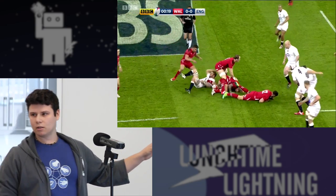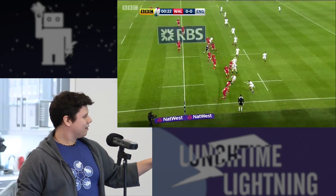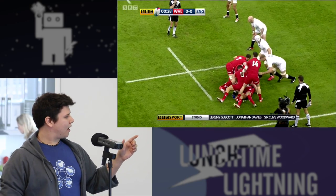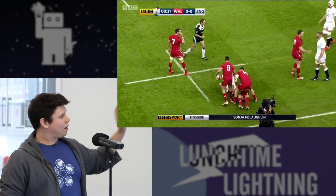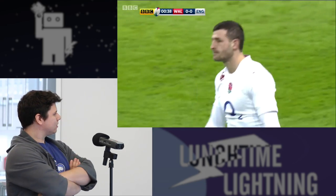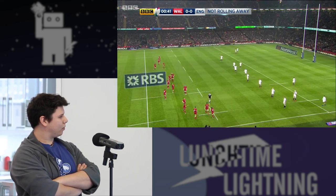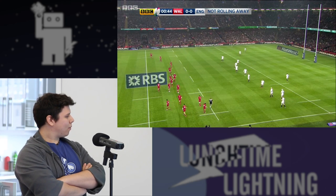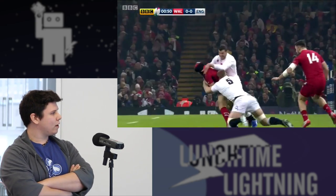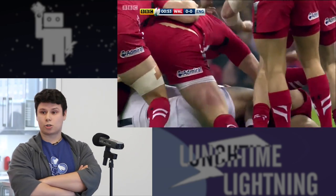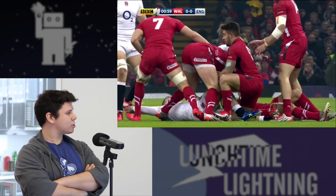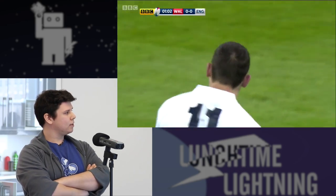In rugby, you always have to pass the ball backwards. Wales is in red and England is in white, and England is constantly trying to pass the ball down the line to get around the other team. Wales just got given a penalty — the way penalties work is that you can take a kick from where the penalty happens. Often if you're in the opposition's half, you'll try and score a penalty by kicking the ball in between the posts, which scores you three points.